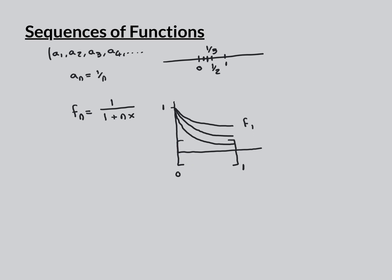This sequence of curves raises the question: is there some curve that it's getting closer and closer to as the sequence goes on? The limit isn't going to be just a point as with sequences of real numbers, but an entire function — an entire curve. As n gets bigger, the sequence of curves gets closer and closer to the function that maps everything onto zero, except at x=0 itself, where every function always maps onto 1.